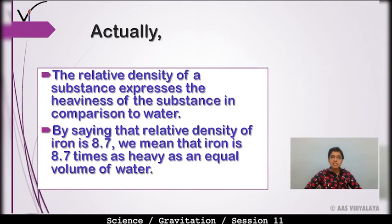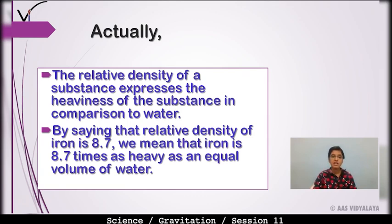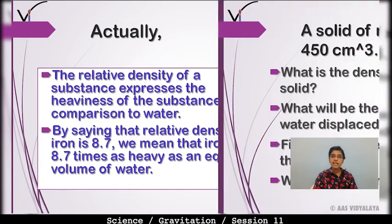The relative density of a substance expresses the heaviness of the substance in comparison to water. By saying that the relative density of iron is 8.7, we mean that iron is 8.7 times as heavy as an equal volume of water. Agar hum yeh kehte hain ki iron ki relative density 8.7 hai, to hamara matlab hota hai ki iron 8.7 times heavy hai in comparison to an equal volume of water.